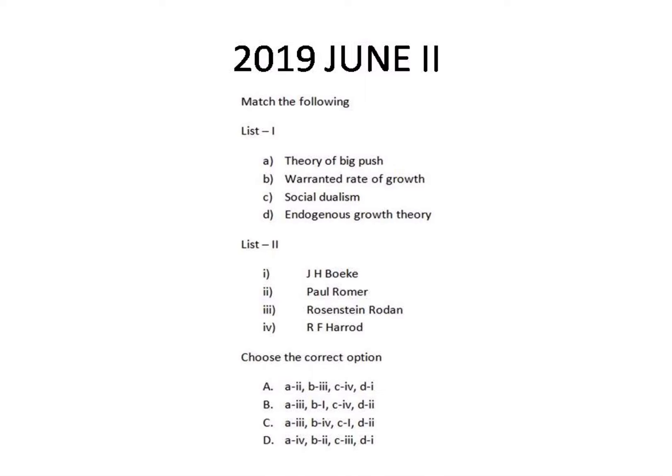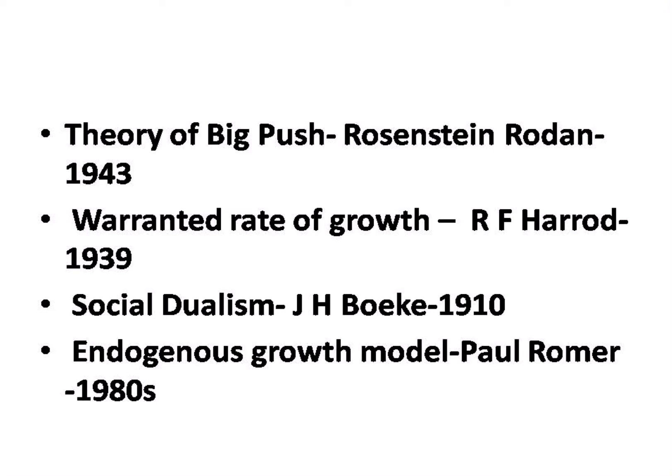This question was given in 2019, June, Paper 2. The question is a match-the-following. The theory of Big Push was given by Rosenstein-Rodan. Warranted rate of growth was given by Harrod. Social dualism was given by J.H. Boeke and relates to the Indonesian economy. The Endogenous Growth Theory is given by Paul Romer. Accordingly, the correct answer is option C.